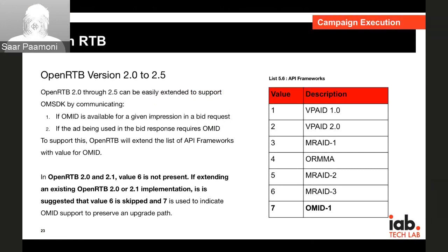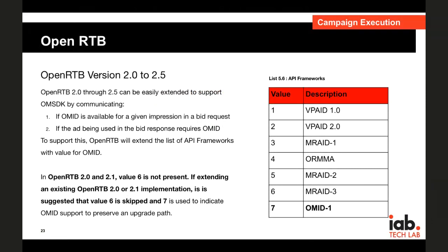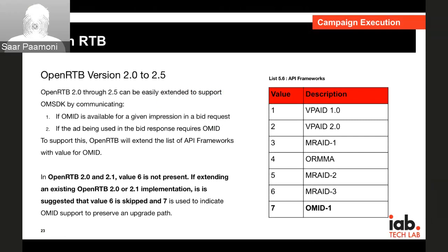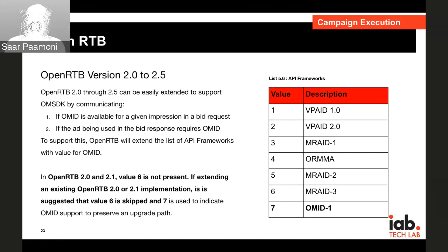Starting off, how to bid on OMSDK inventory is made apparent via a new ID on OpenRTB spec starting version 2.0. It's recommended that if you don't support the Emory 3 option, ID number 6, then you'll skip that and go to ID 7. Essentially, this will be available via any Ads SDK that opens up an auction and will transmit it on the API list.